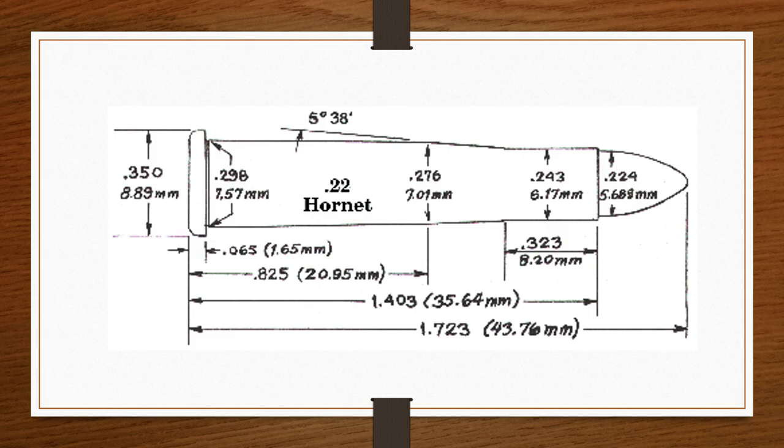In Europe, the Hornet is known by its metric designation, the 5.6 by 35R millimeter rimmed.